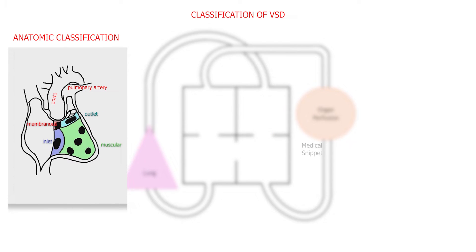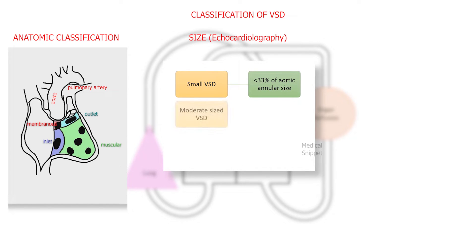The second classification is according to the size of the VSD by echocardiography. A small VSD is less than 33% of aortic annular size. A moderate-sized VSD is 33-75% of aortic annular size. And a large VSD is more than 75% of aortic annular size.